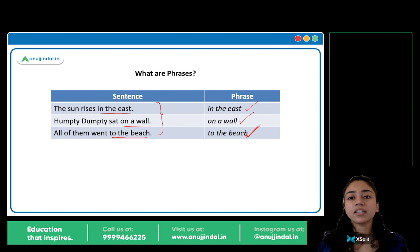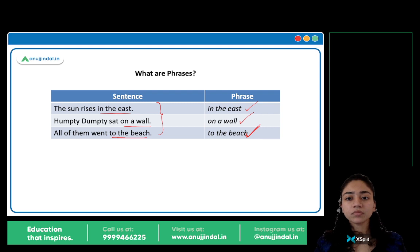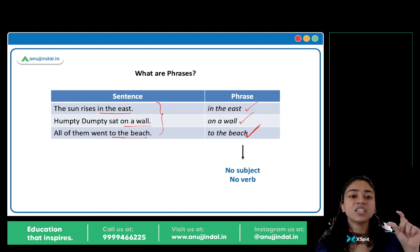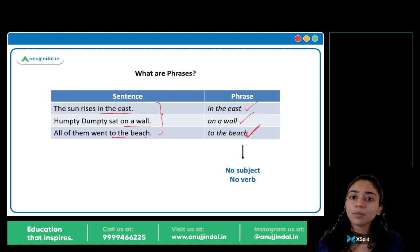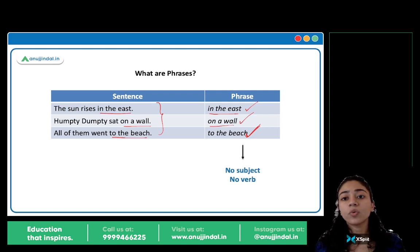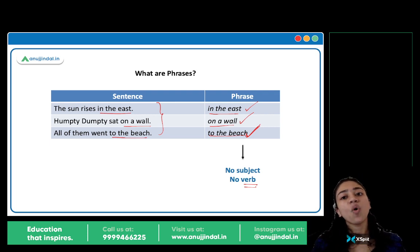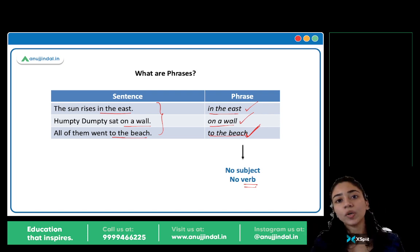How do you identify a phrase? A phrase has no subject and no verb. In the east, on a wall, to the beach — there is no subject, you are not naming anything, and there is no verb. A verb is a word that denotes an action — talk, walk, eat, sleep. Phrases have no subject-verb component.